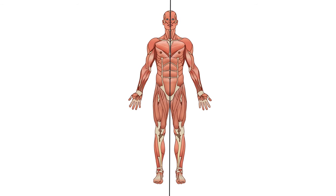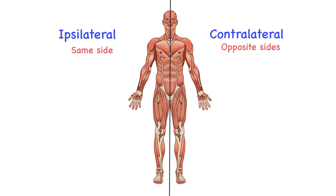Today we're going to talk about the difference between ipsilateral and contralateral. Ipsilateral refers to things on the same side of the body or the brain. Contralateral refers to things on opposite sides. When talking about the same or opposite sides, we refer to the body as cut in half directly through the midline, referring to things being on the same side of the body, either the right or the left, or on opposite sides.